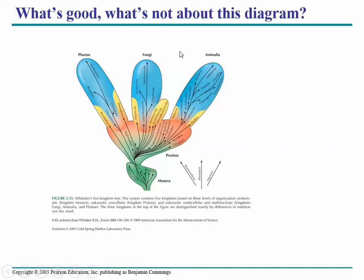If you walked into the woods and found a new multicellular eukaryote, how would you know whether it's a plant, animal, or fungi? We group these organisms by their mode of nutrition. Multicellular organisms that make their own food by photosynthesis we call plants. Those that absorb their food we call fungi. And those that ingest their food we call animals.